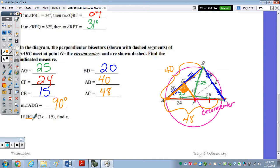So if the length of BG is represented by the expression 2X minus 15, then find the value of X. So once again, we said that BG was the radius of the circle. So therefore, we're going to set or replace BG with 25. Set that equal to the expression 2X minus 15. Add the 15 over, we get 40. Divide by 2, and X is 20.